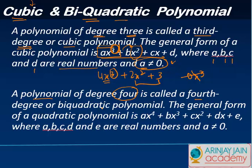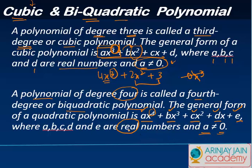The last one is a biquadratic polynomial, where the degree is four, also called a fourth-degree polynomial. The general form is ax⁴ + bx³ + cx² + dx + e, where a, b, c, d, and e are real numbers. Not all terms need to be present, but a must be present and a ≠ 0.